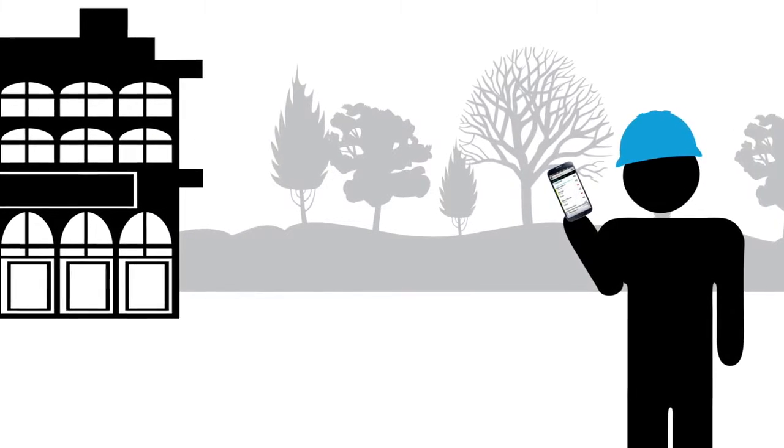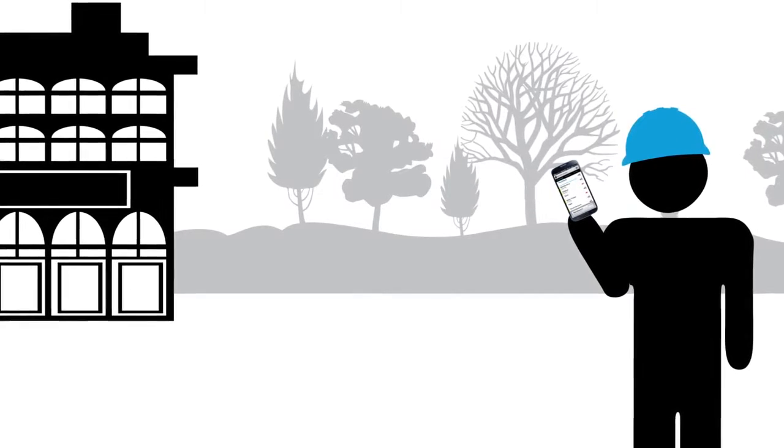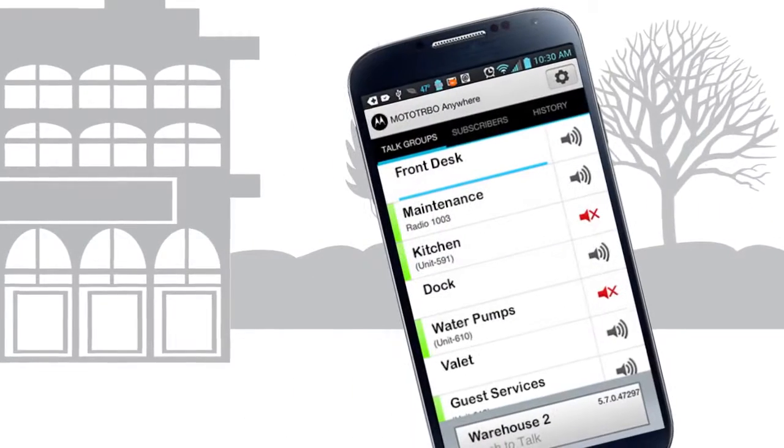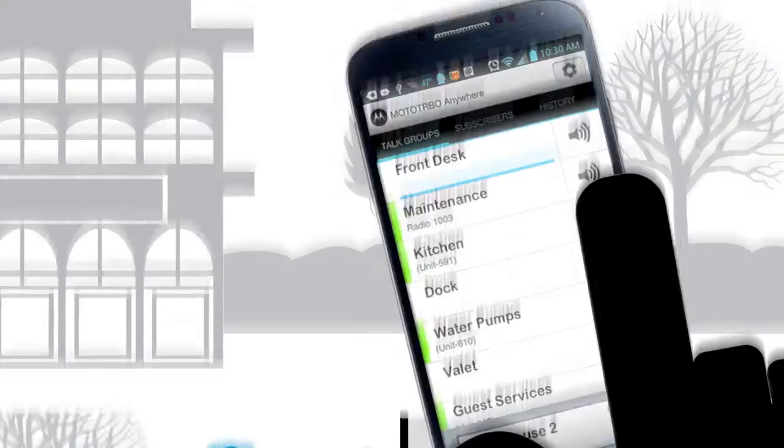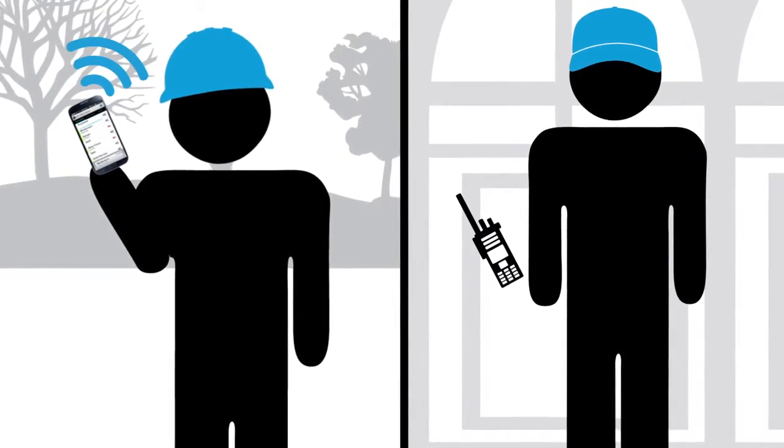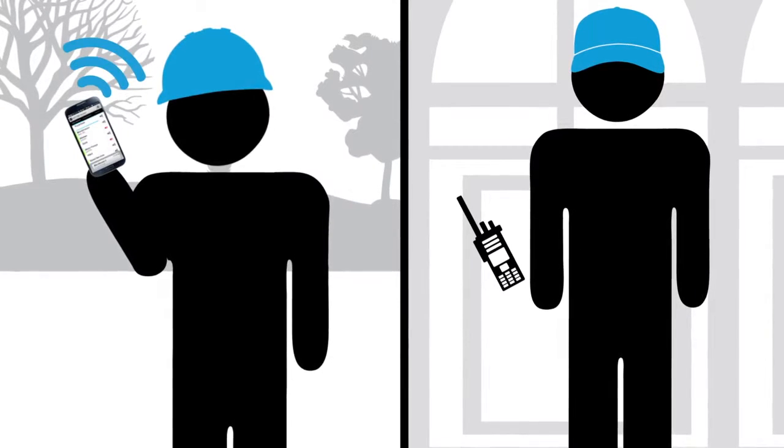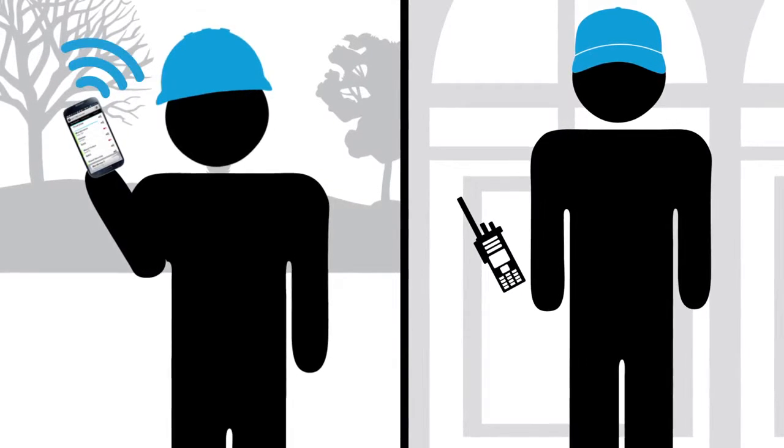At a hotel, temporary contractors need to communicate with maintenance staff. Moto Turbo Anywhere can be used to connect their smart devices to the hotel's Moto Turbo system. Now, the contractors are constantly in touch with hotel operations, so their work is completed safely and efficiently.